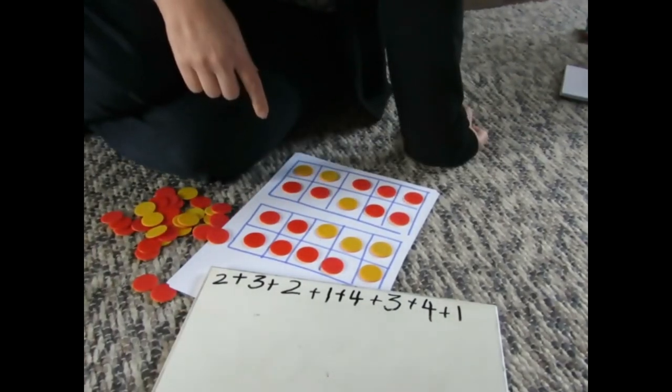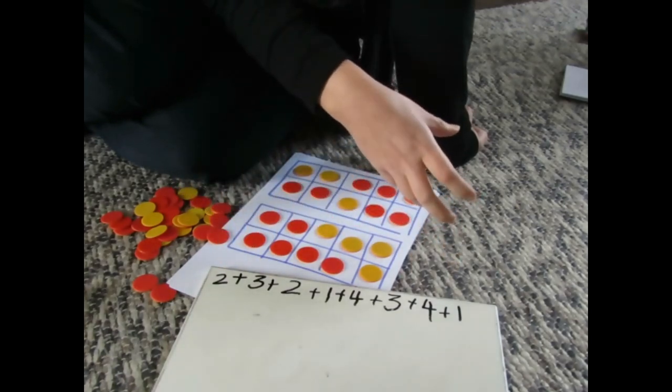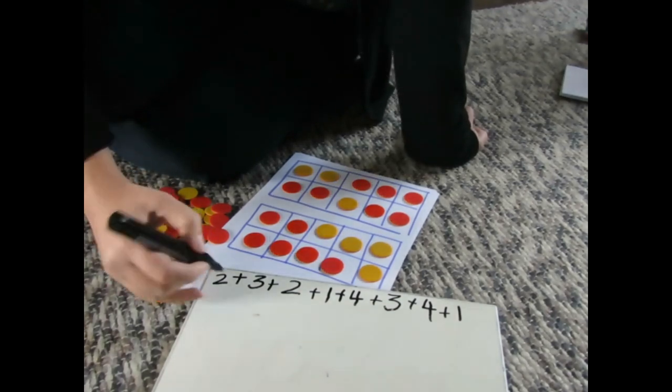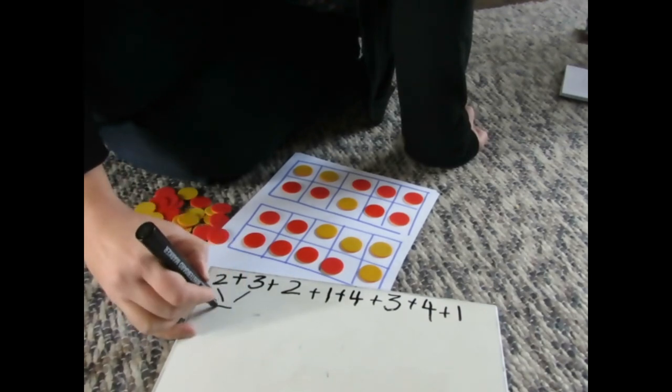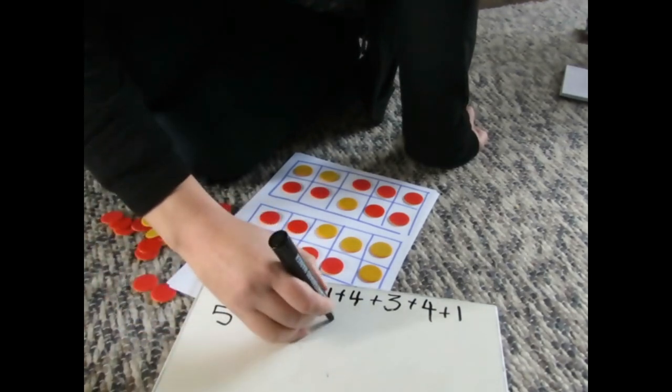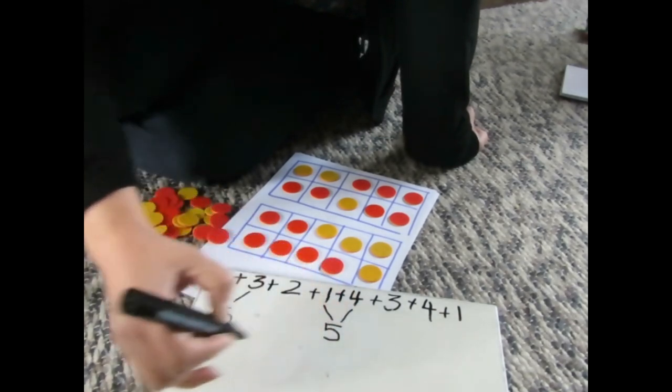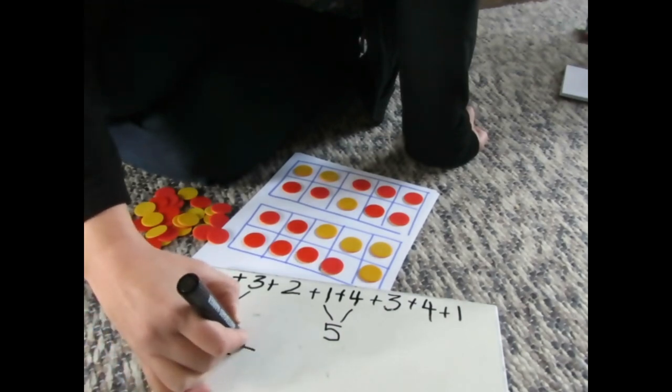Okay so now we are going to think about how we can reorder the calculation to make the addition simpler. So what do you notice? There's a five, two and three and there's a one and four and they're both equal to five. So can I borrow your pen? So Ellen has noticed that she can make a five here.